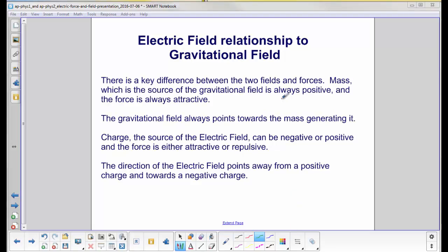There is a key difference between the two fields, the electric field and the gravitational field, and their forces. Mass, which is the source of the gravitational field, is always positive, and the force is always attractive. The gravitational field always points towards the mass generating it.